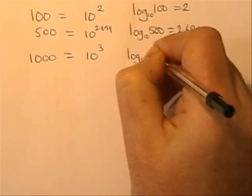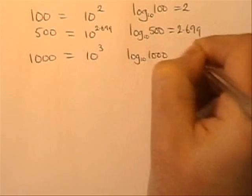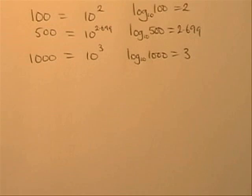So another way, log to base 10 of 1000 is equal to 3. But also a couple of laws of logarithms which we're going to be using. And it's easy to illustrate if we do an example.